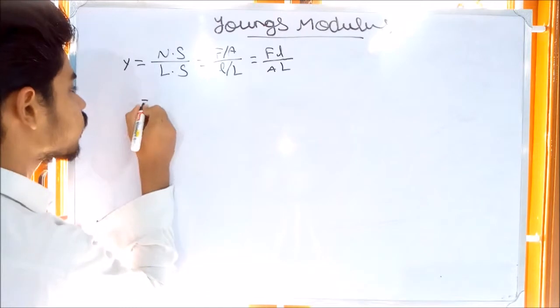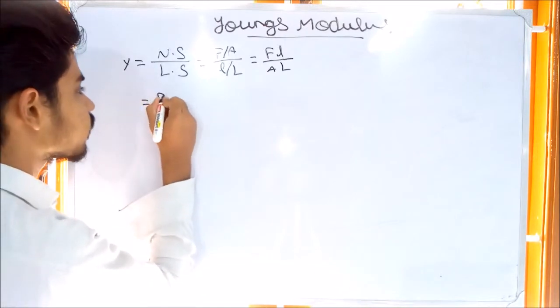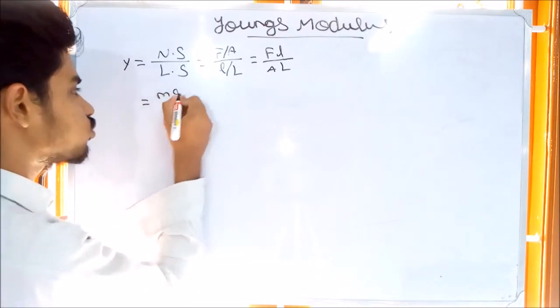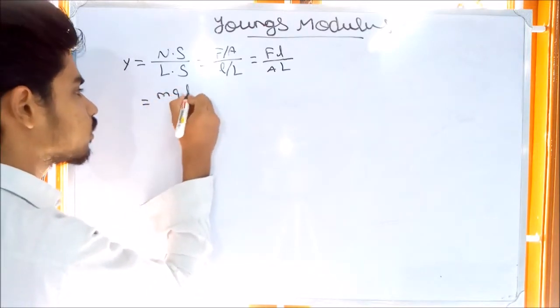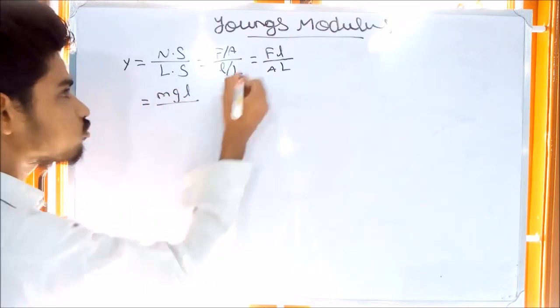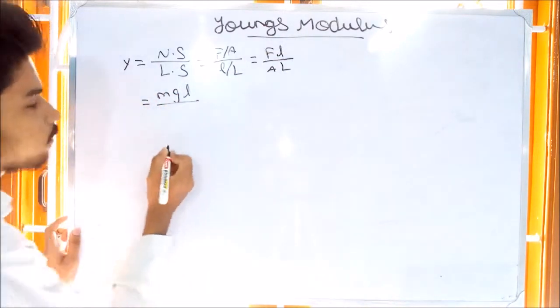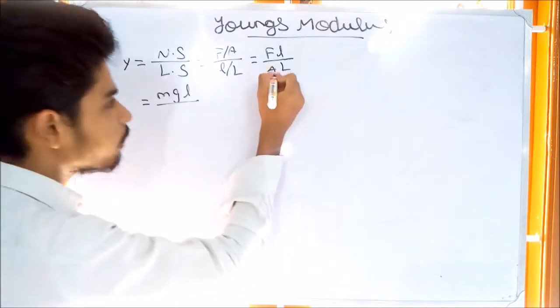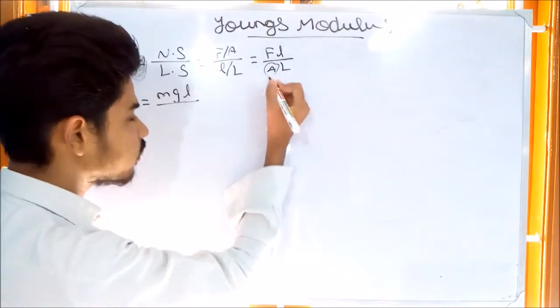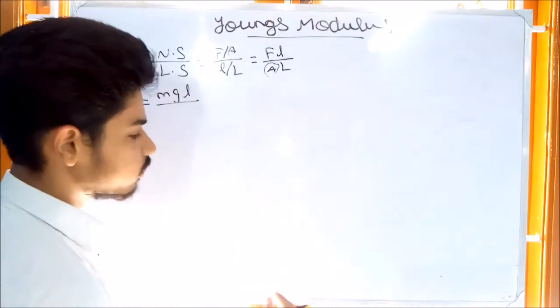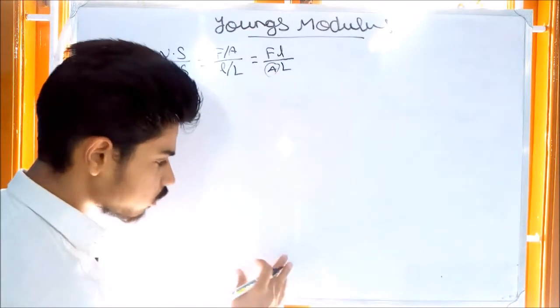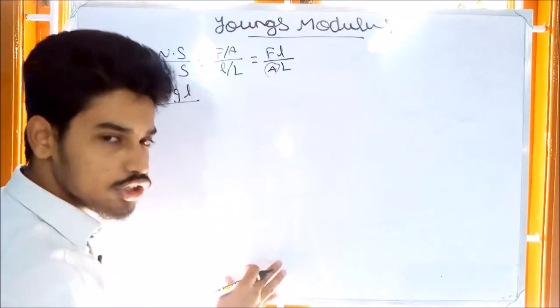The force acting is M times G. A is the area — specifically the cross-sectional area of the object.